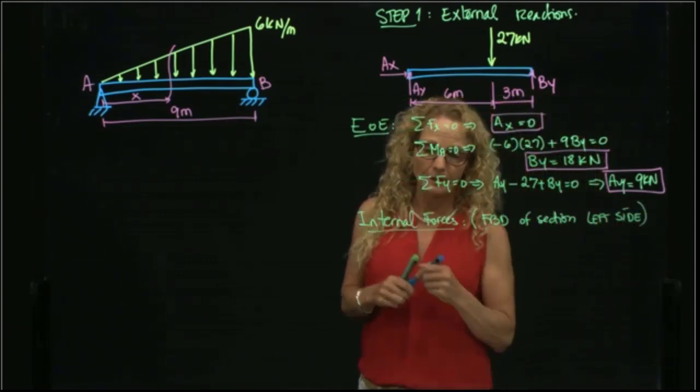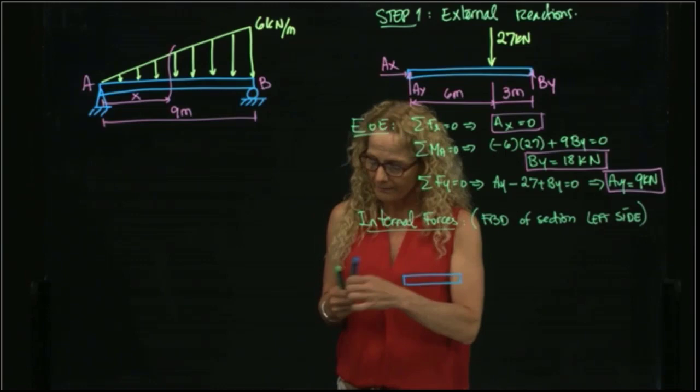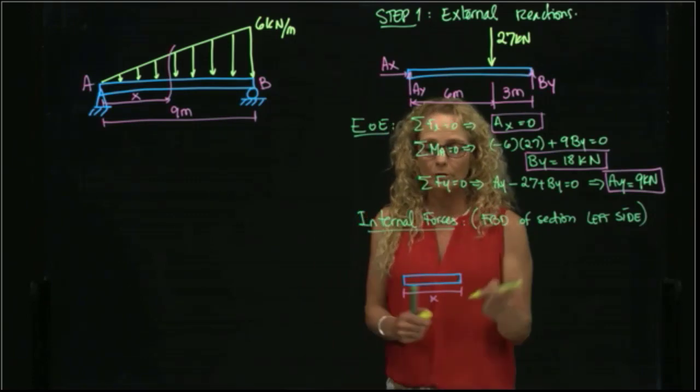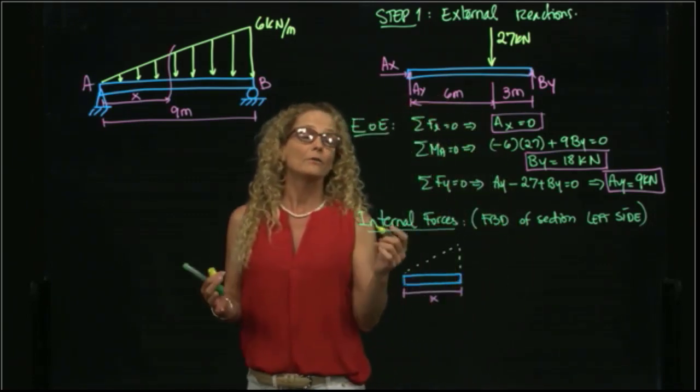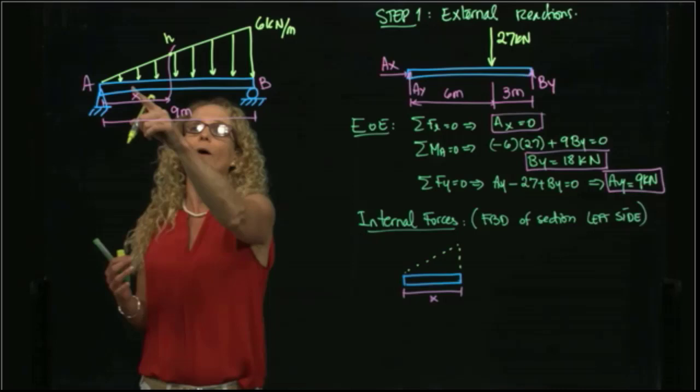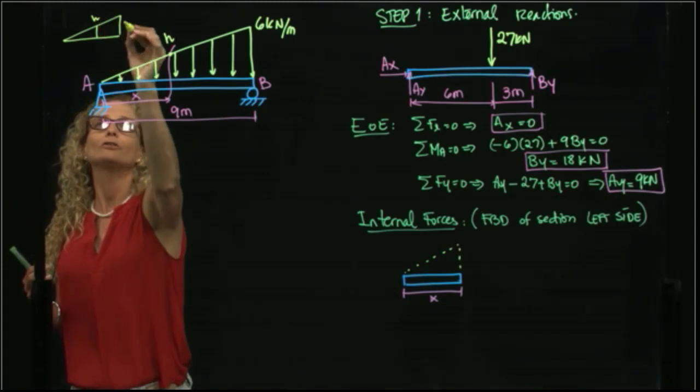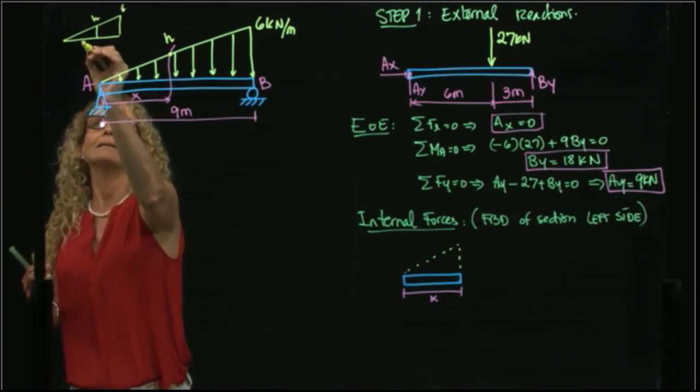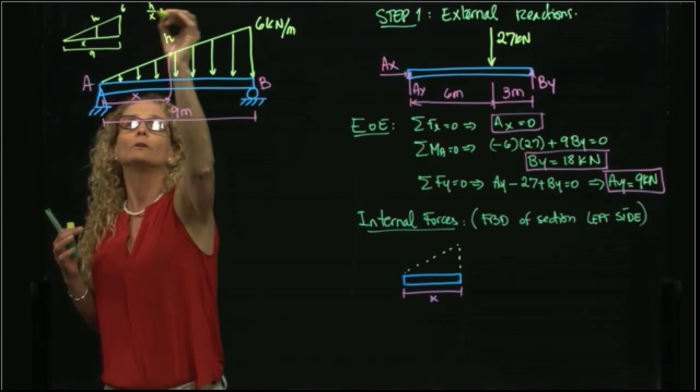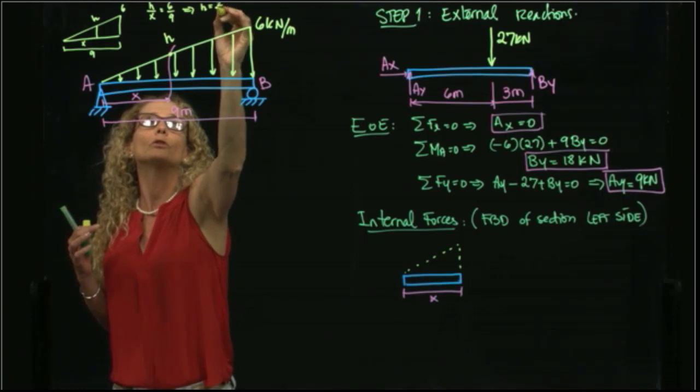So my free body diagram is this piece at distance X. I have my distributed load, but I want to place it as a concentrated load. Therefore, I need this height over here. And what would be that height? Well, I can use similar triangles. Here is H, this is 6, and this is X, and this is 9. Therefore, H over X will be equal to 6 over 9. Therefore, H will be equal to two-thirds X.